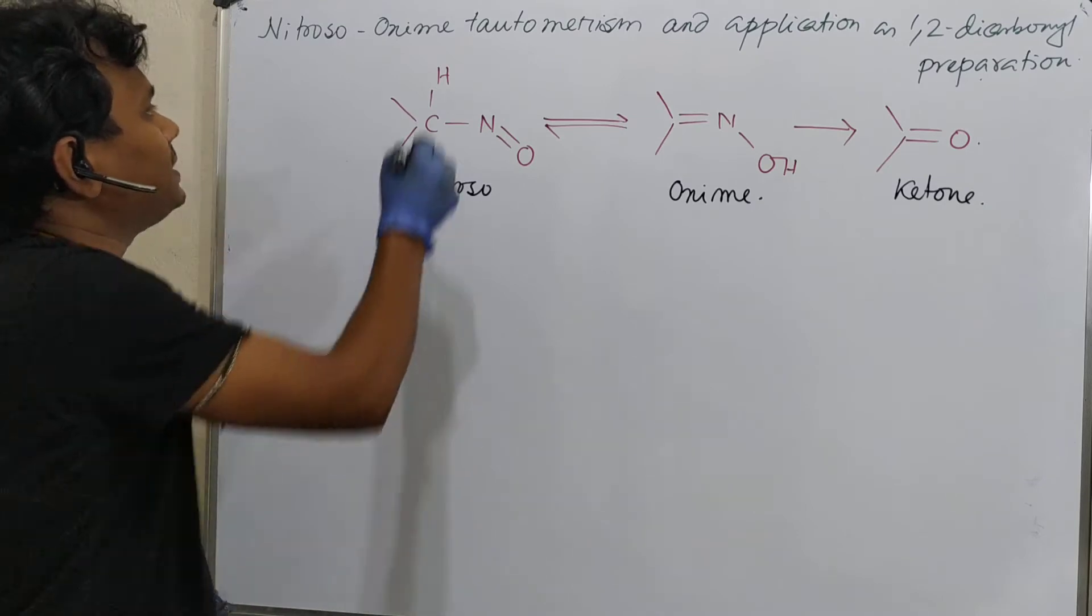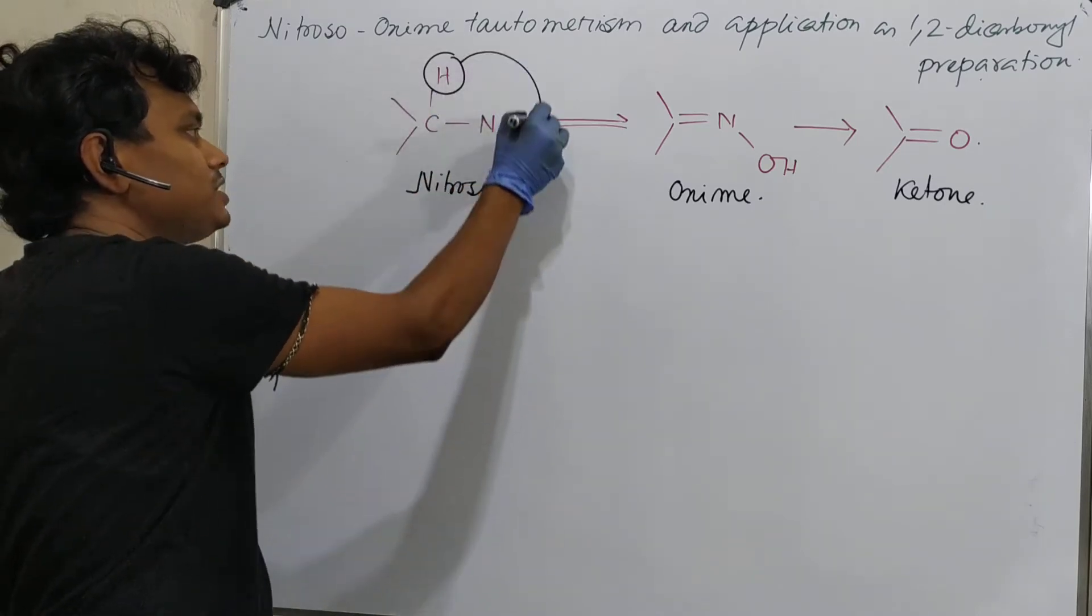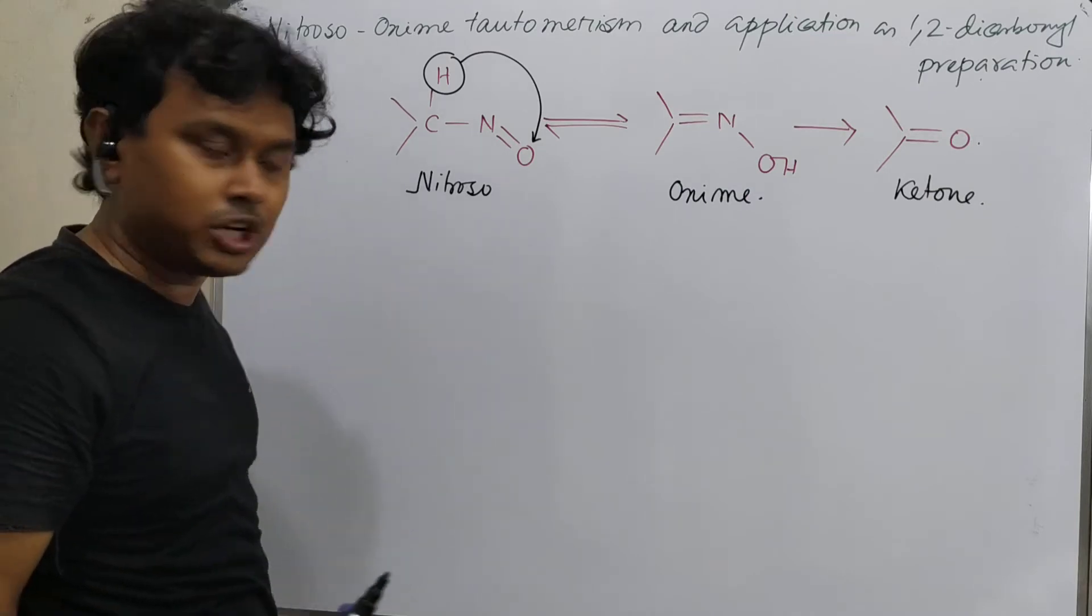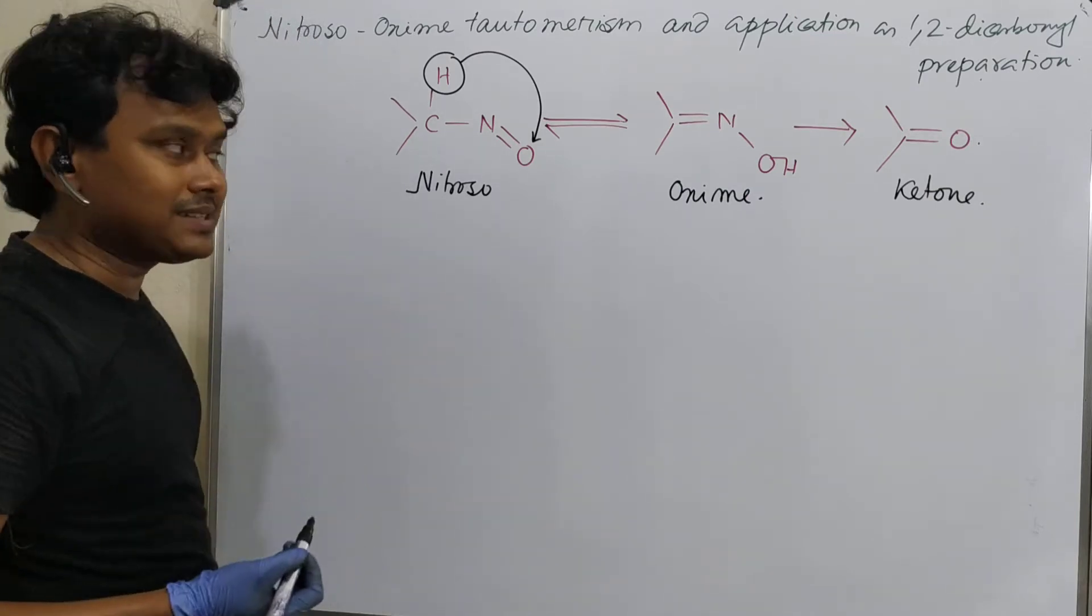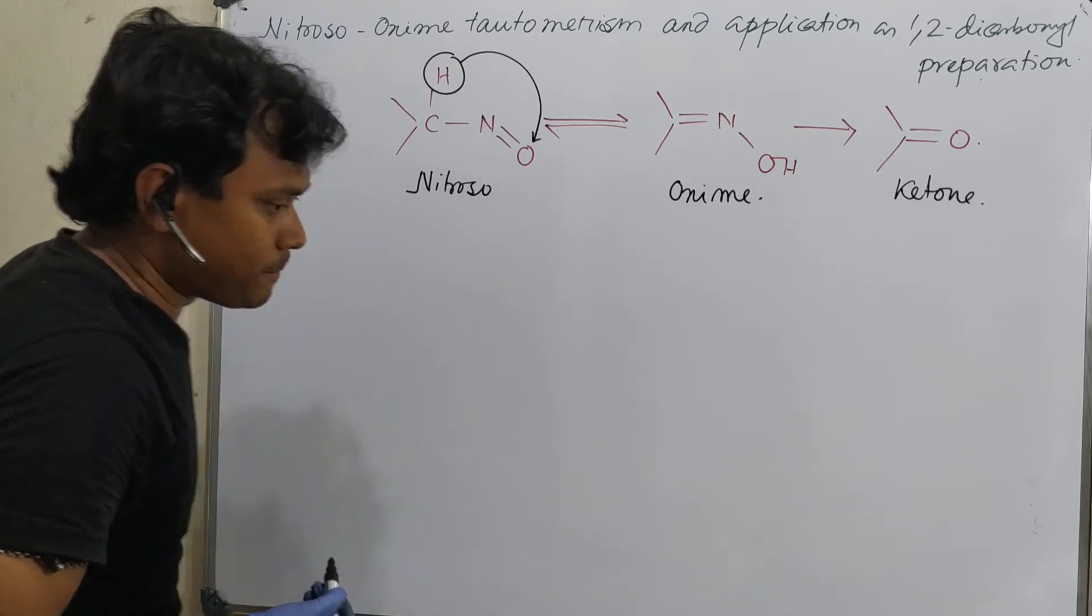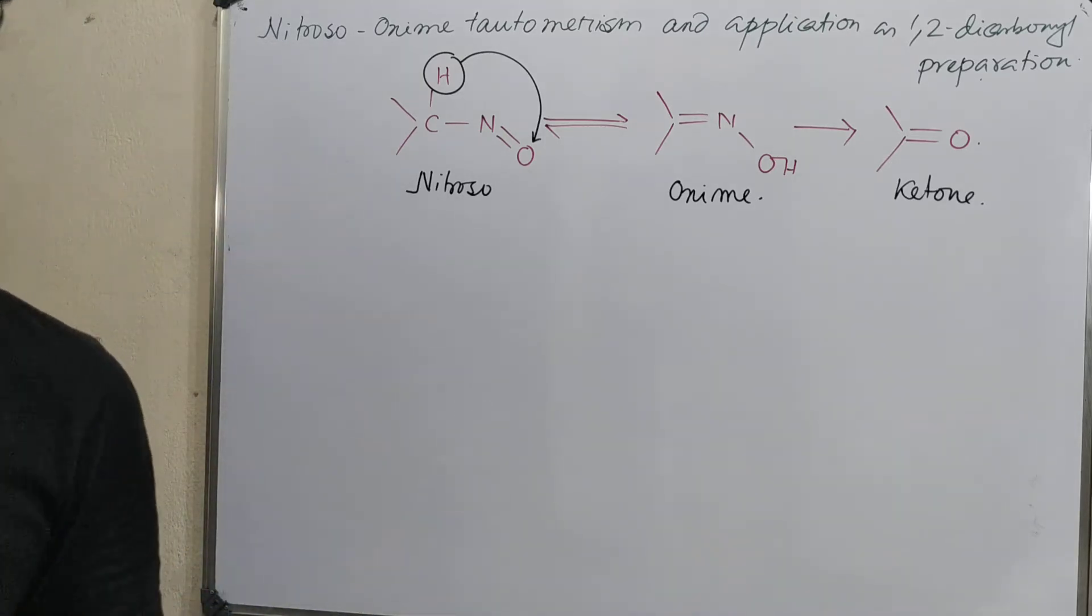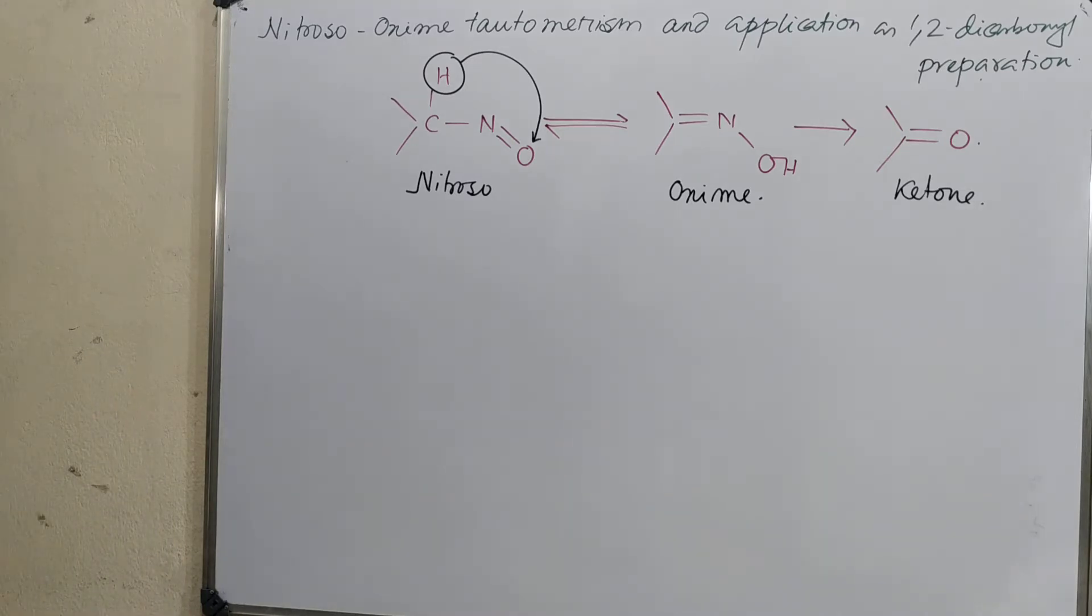So let's come to key points. What is actually happening? This proton is shifted from here to here. See, this happens. So that is the tautomerism, shifting of proton. Now how does this happen? This thing happens. Actually, this is tautomerism, means shifting of proton.